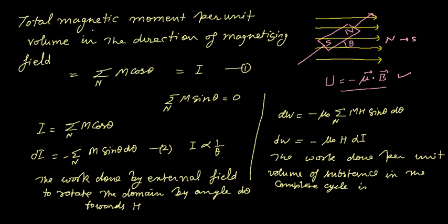So here in our case, the example which we have considered—total magnetic moment per unit volume in the direction of magnetizing field—we have considered this one.